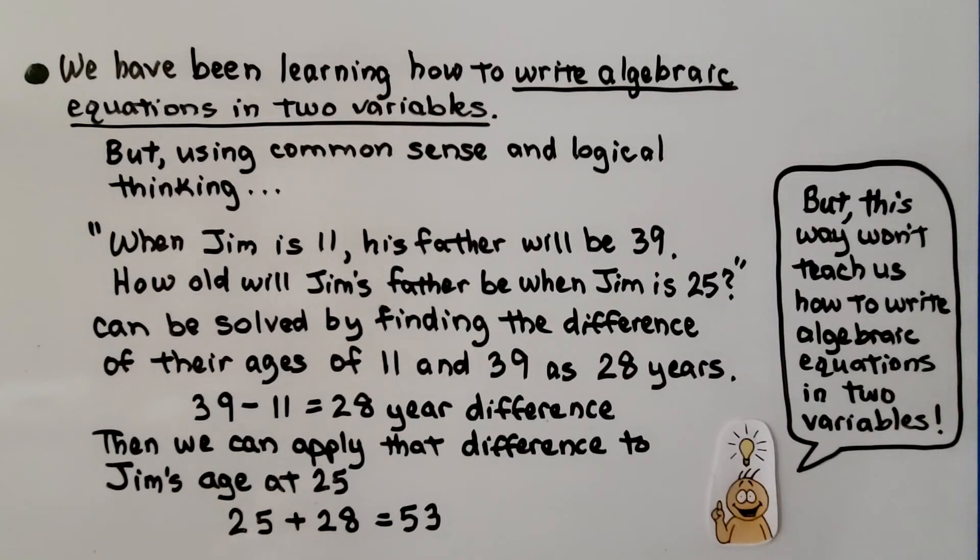Now, we've been learning how to write algebraic equations in two variables. But using common sense and logical thinking, when Jim is 11, his father will be 39. How old will Jim's father be when Jim is 25 can be solved by finding the difference of their ages, 11 and 39, as 28 years. 39 minus 11 equals 28 year difference. Then we can apply that difference to Jim's age at 25. 25 plus 28 equals 53. Yes, it could be solved just by using subtraction and addition like this. But this way won't teach us how to write algebraic equations in two variables, which is what we're trying to do. And if it seems like we're using easy problems, that's so you can understand the concept.